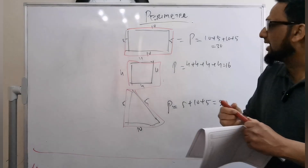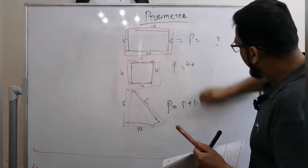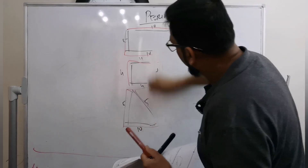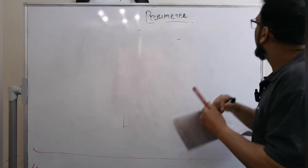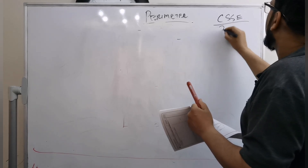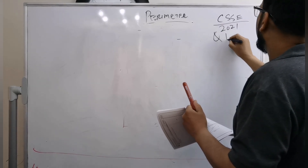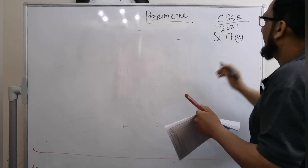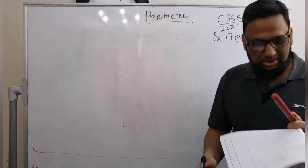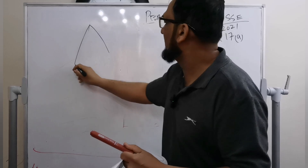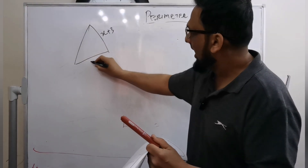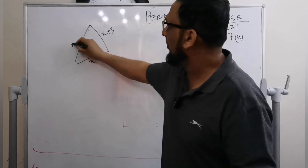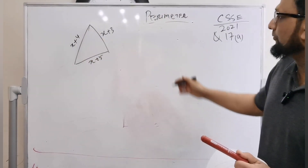You need to do exactly the same with this exam paper. This is question number 17, part A from CSSE 2021. The question gives you a triangle with sides labeled x plus 3, x plus 5, and x plus 4.